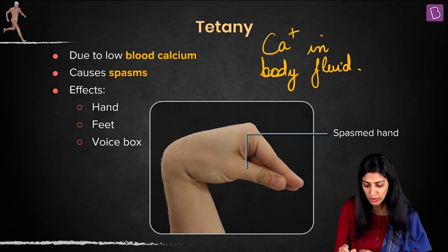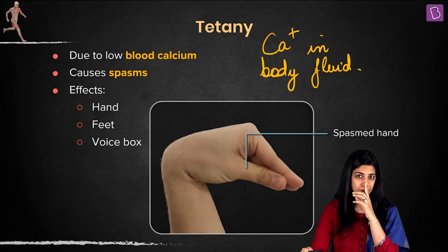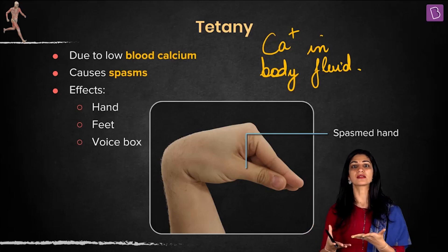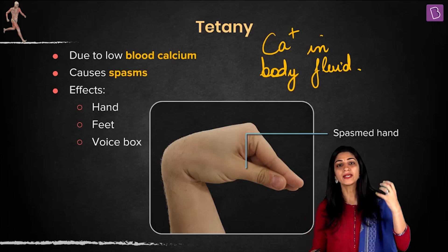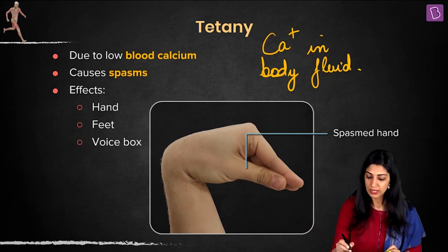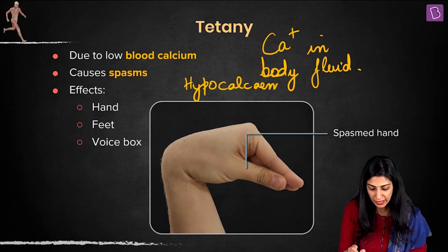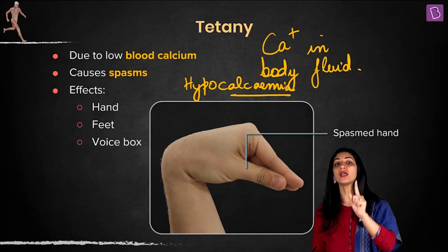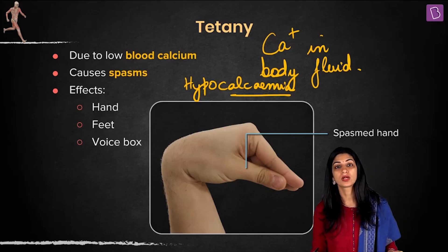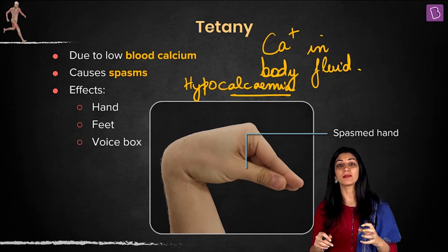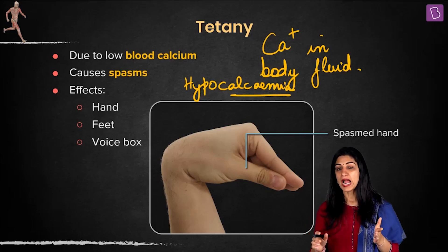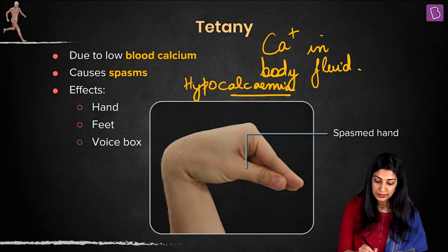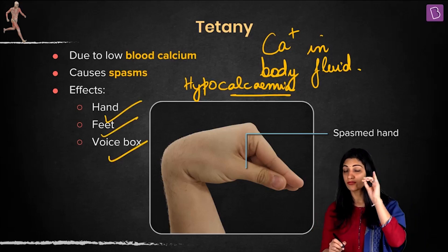This is different from calcium in the muscle — do not confuse the two. Calcium in the muscle is required for muscle contraction, but here we are talking about hypocalcemia — low calcium in the body fluid. In hypocalcemia, rapid contractions take place; the mechanism will be covered in the nervous system chapter. Tetany affects the hand, feet, or even the voice box. The keyword is spasm.